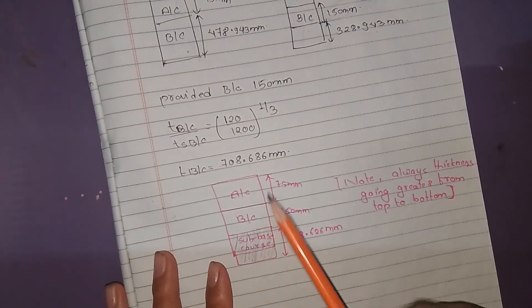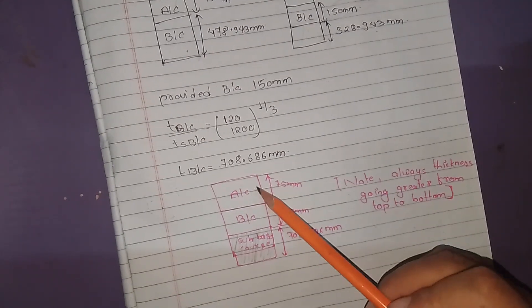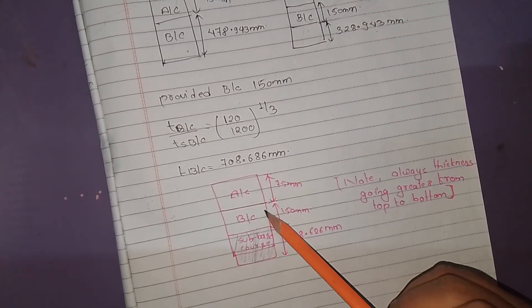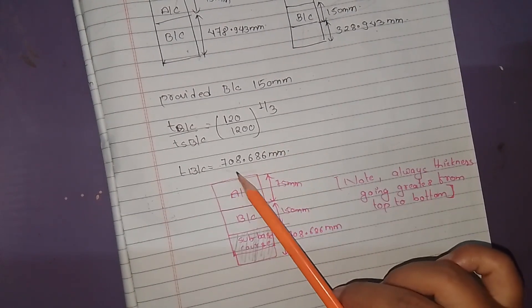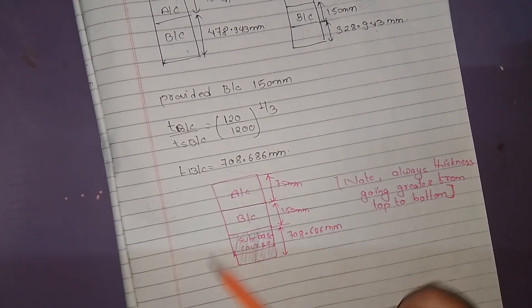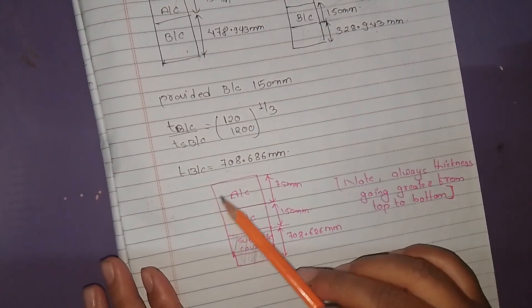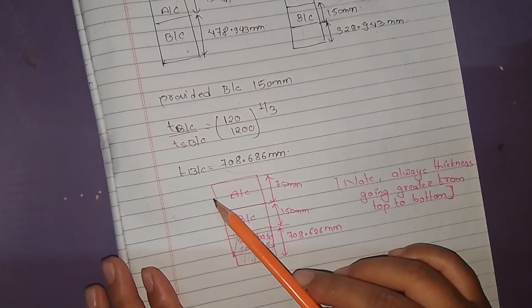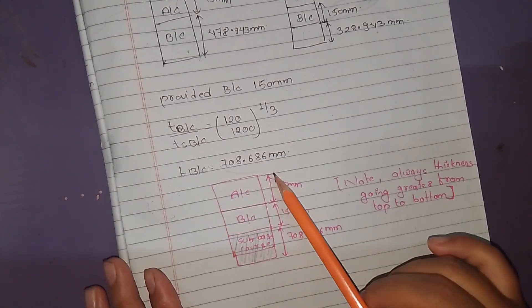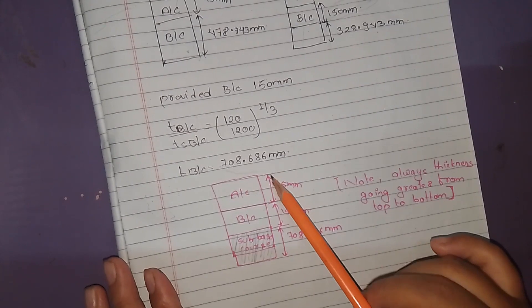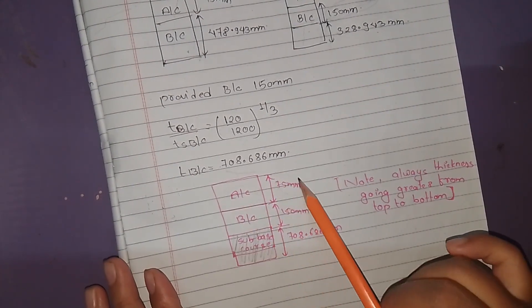The final design consists of the asphalt concrete surface course, base course, and subbase course. The asphalt concrete thickness is 75 mm at the surface.